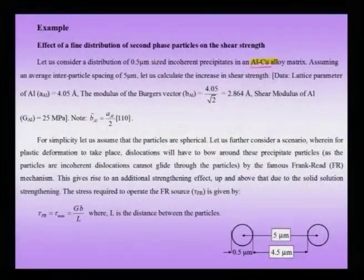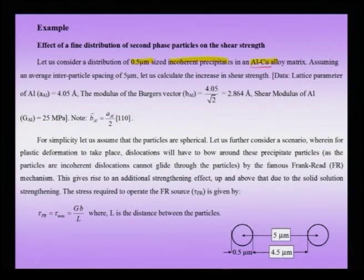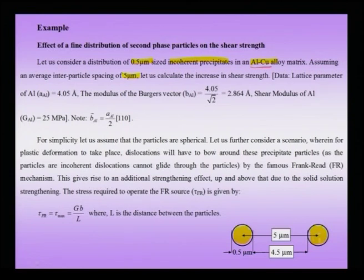Consider a fine distribution of precipitates of, for instance, 0.5 micron size — what are called incoherent precipitates, meaning lattice planes are not continuous across from the precipitate to the matrix. We assume an average inter-particle spacing of about 5 microns. We assume spherical precipitates — though in the actual aluminium-copper system the precipitates are not spherical. With a diameter of about 0.5 microns and inter-particle spacing of about 5 microns, the surface-to-surface distance turns out to be about 4.5 micrometers.